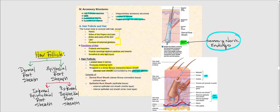Let's look at the structure of the hair follicle. One component is the dermal root sheath, which is made up of dense fibrous connective tissue and is the outermost layer of the hair follicle. In addition, we have the epithelial root sheath — the tissue making this sheath is epithelial. We can further break it down into the external epithelial root sheath, which is the middle layer, and the internal epithelial root sheath, which is the innermost layer. The dermal root sheath is connective tissue, while the epithelial root sheath is epithelial tissue.